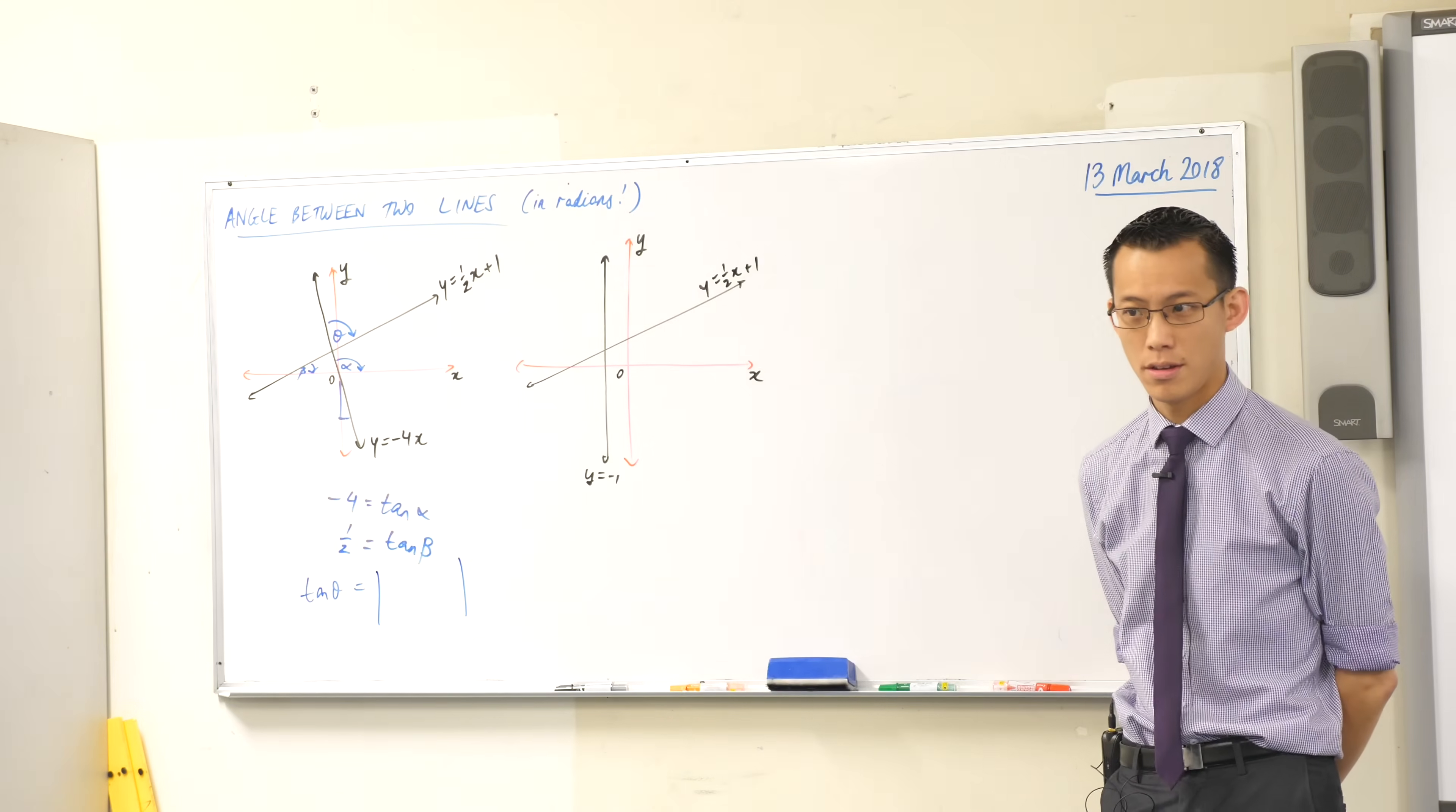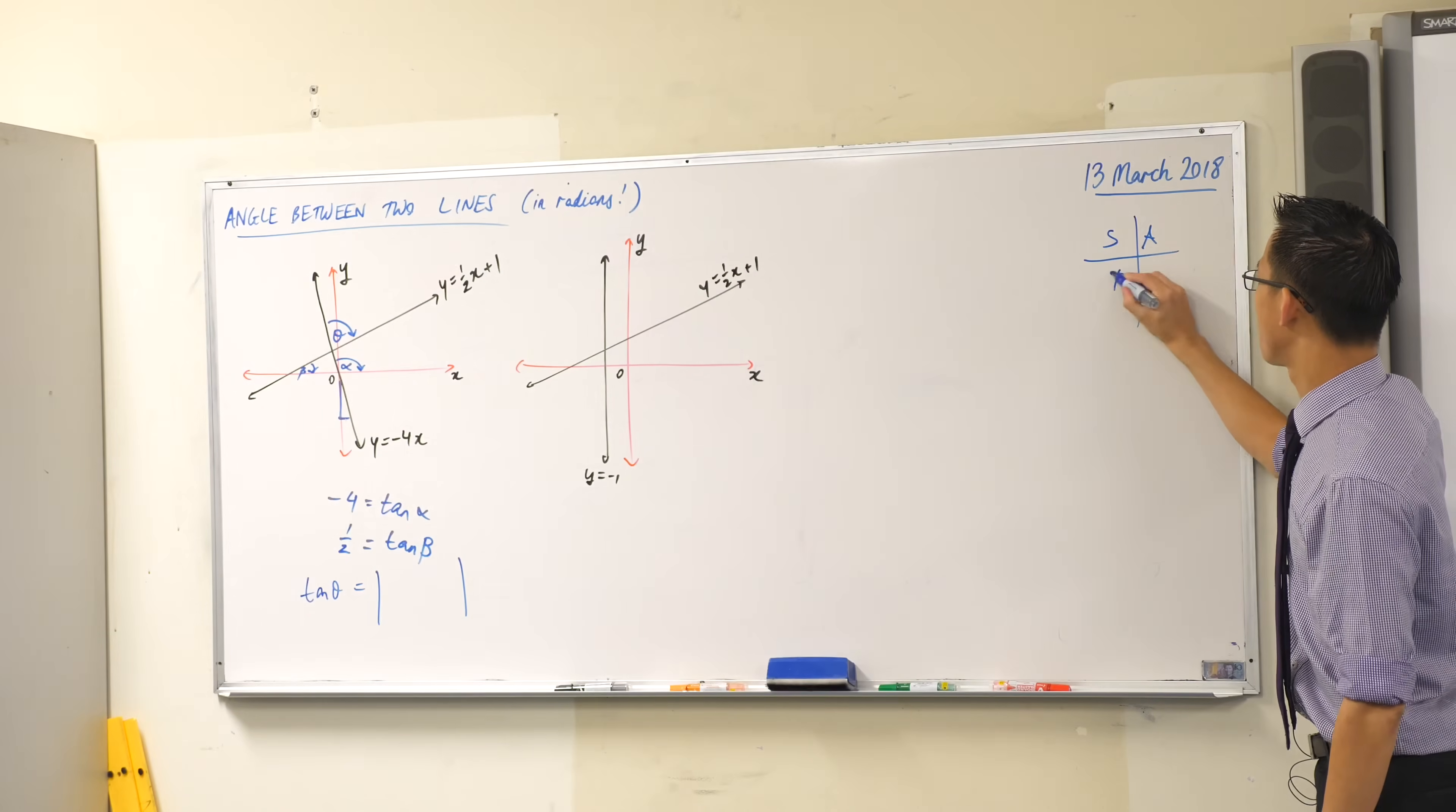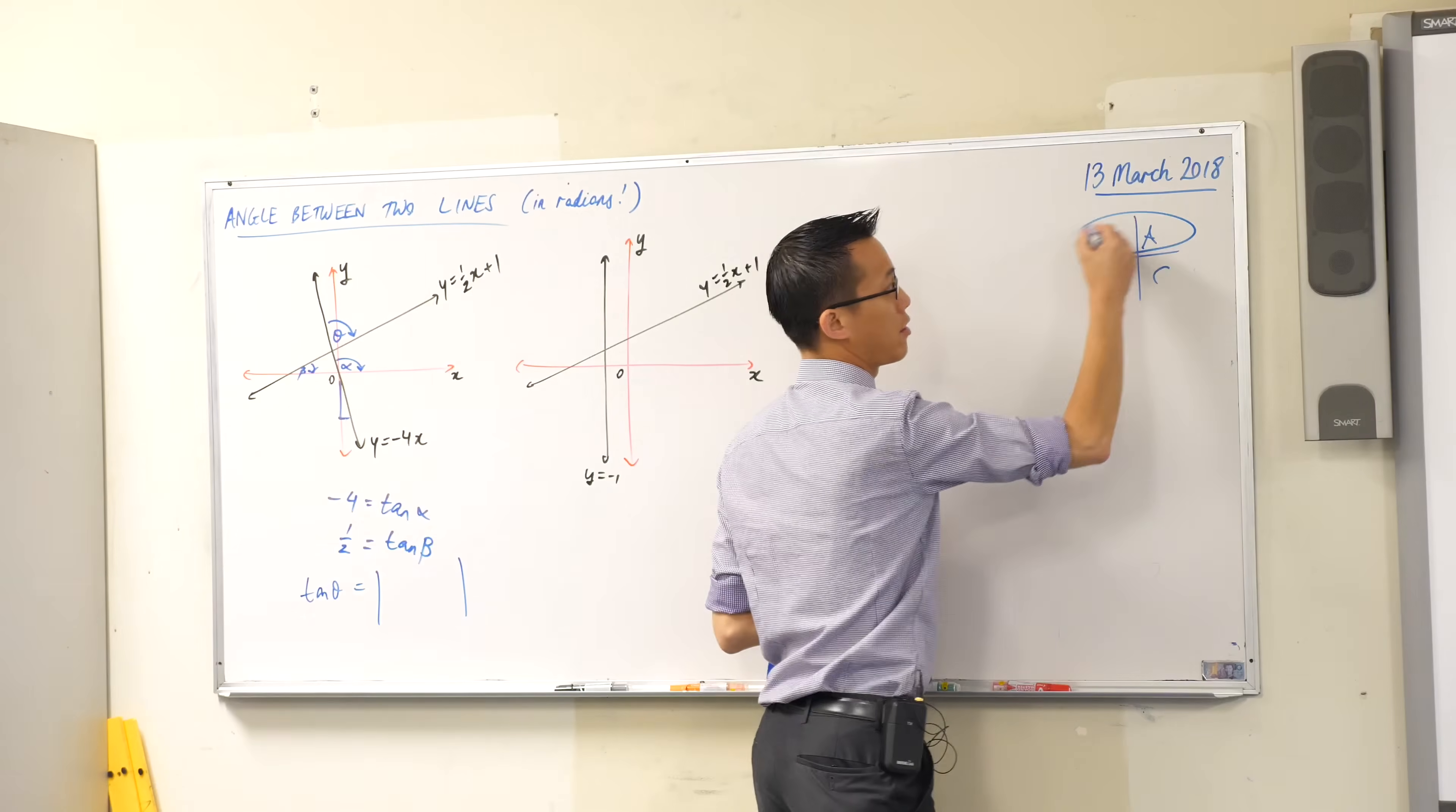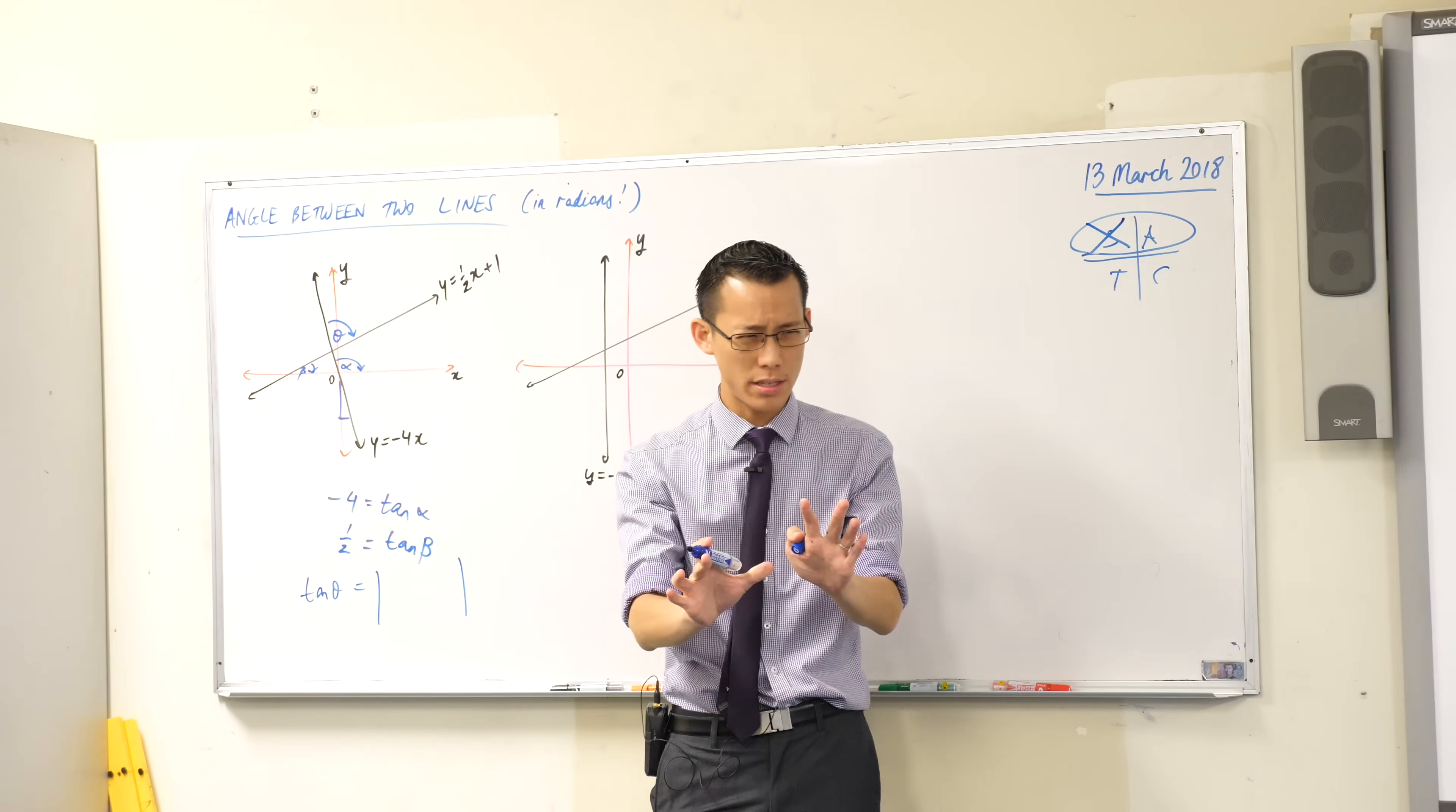Why do I put absolute value signs? It can't be negative, but what effect does that have? Why does that give me the acute angle? Think about it. Do you remember this guy? The angle you're going to get is going to be either acute or obtuse. It's either acute or obtuse, so it's going to be up here in quadrant one or two. But if you're in quadrant two, tan is negative. If I want to avoid that, I just say, let's make tan positive and you will not get this angle, you'll get the acute one. Does that make sense?